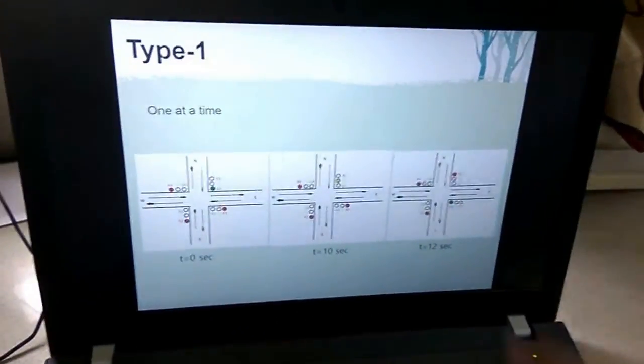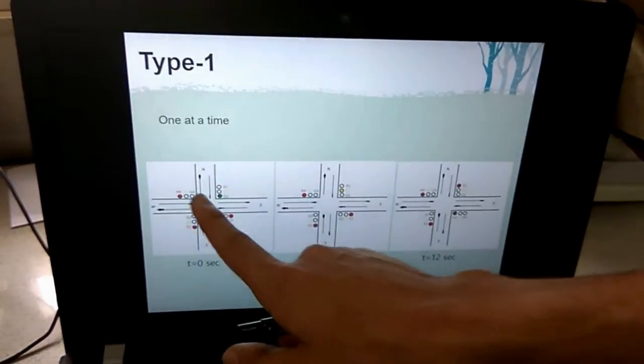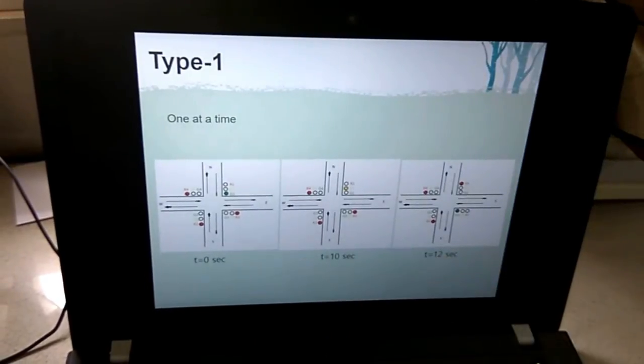Now, coming to the type 1 crossing. This is the type 1 crossing, one at a time, where there is a four way and only one lane is allowed to go in any three of the other lanes.